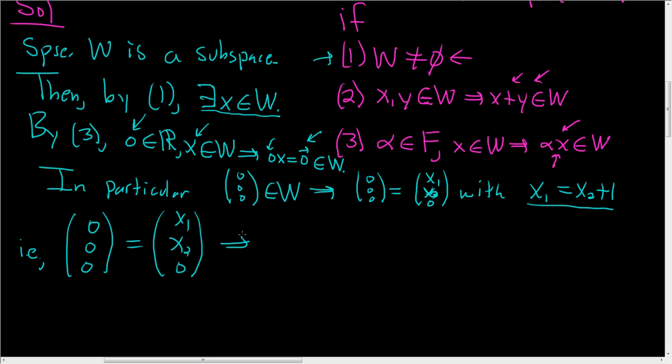So that means that X1 is equal to zero and X2 is equal to zero. But at the same time, X1 is equal to X2 plus one. So this is X2 plus one equals zero, X2 equals zero. Oh, look at that. So X2 is zero. So zero plus one equals zero. That's a contradiction.